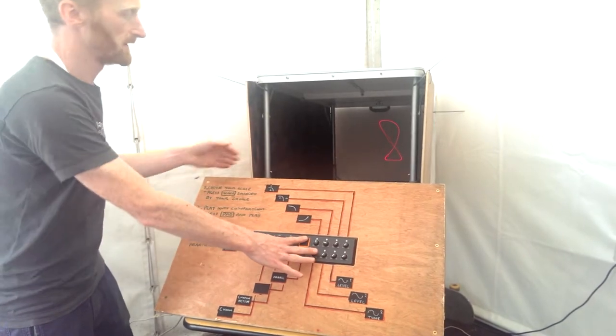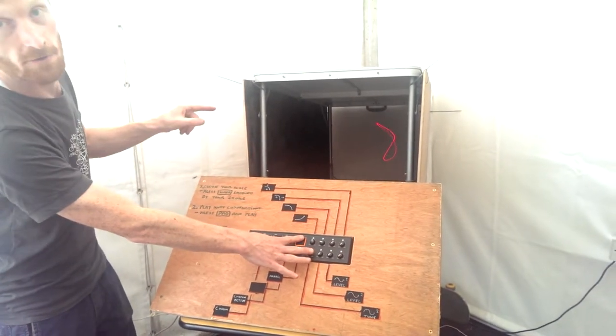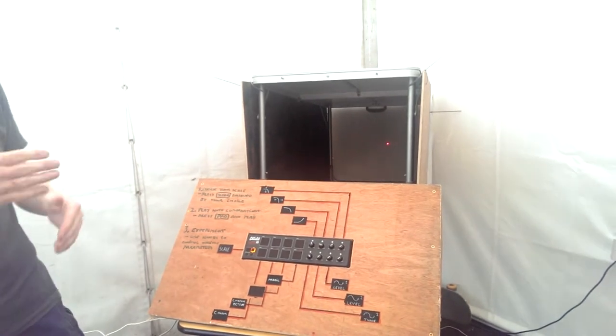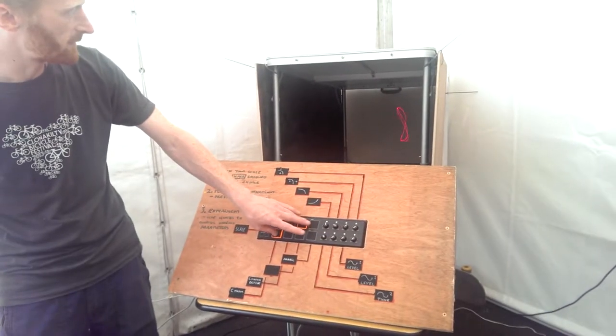So what I'm doing is I'm mapping a laser pointing at a mirror on a speaker. So this is the vibration of the speaker. You get interference and distortion patterns.